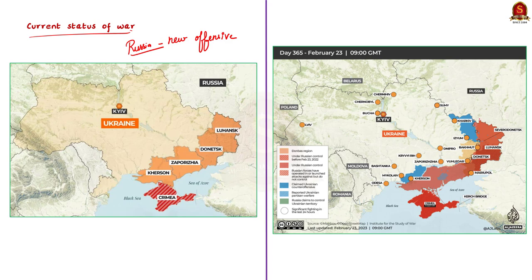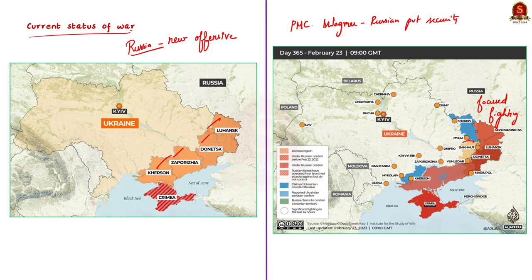So far, Russia has annexed Donetsk, Kherson, Luhansk and Zaporizhia. For the past seven months, PMC Wagner — a private Russian security force with close ties to the Kremlin — had been fighting to take Bakhmut, a city at the crossjunction of several key arteries in Donetsk. Apart from this, Russians have opened two more fronts: one in Izium, north-west of Bakhmut in the Kharkiv oblast, and the other in Ugledar, south of Bakhmut in Donetsk.